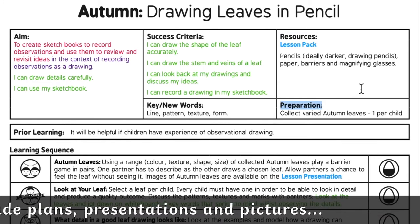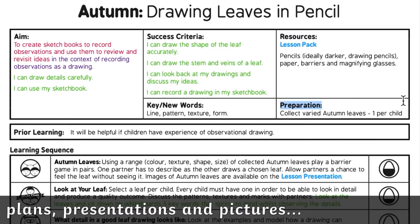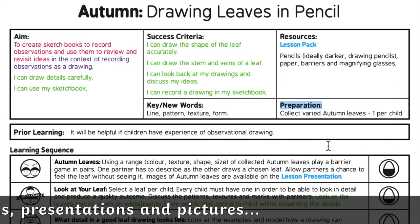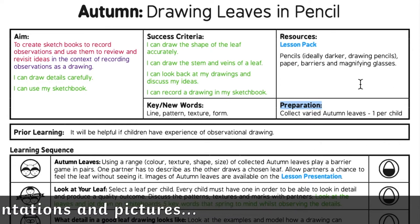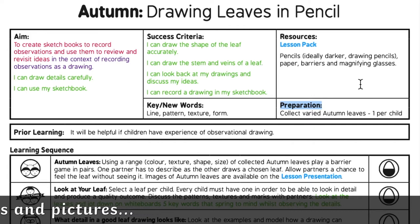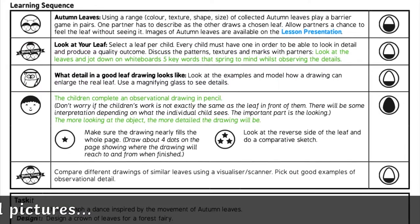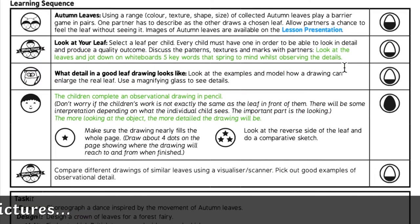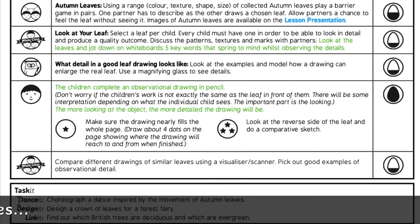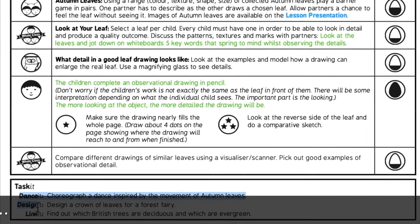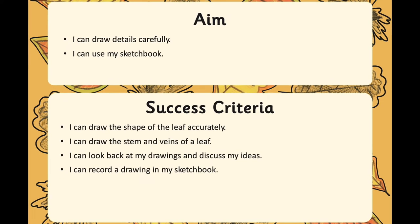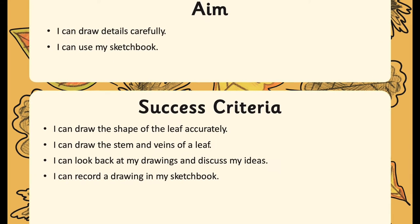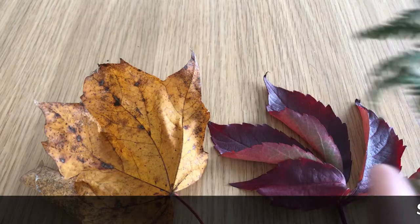A reminder of prior learning to insert these new skills into the wider picture of the curriculum, plus the tasks of the lesson. Also beneficial are the links to other areas of the curriculum such as dance and design within this specific lesson plan. And this lesson focuses on accuracy for stem, veins and form of the leaf.